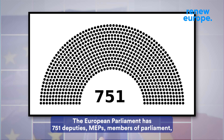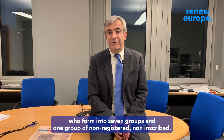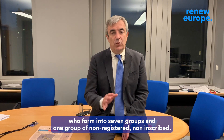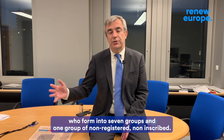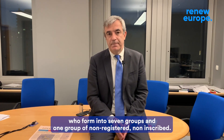The European Parliament has 751 deputies — MEPs, members of Parliament — who form into seven groups and one group of non-inscribed.